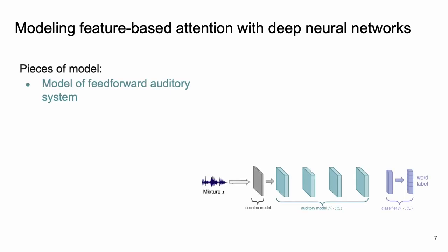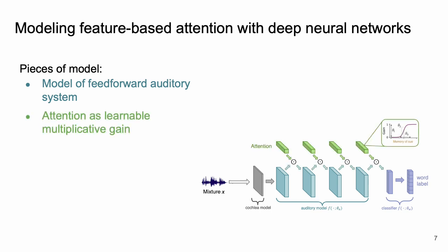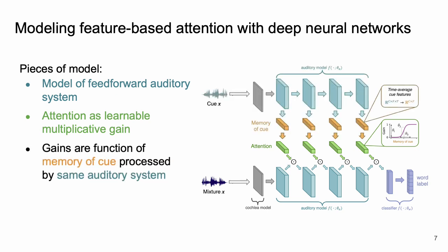We equip these gain functions to a standard model of the feedforward auditory system. These gain functions occur between every layer in the network, attenuating the model representations as they pass through the hierarchy. The gain values themselves are obtained as a function of our cue signals that have been passed through the same auditory model. In training, the parameters for the gain functions and auditory model are jointly optimized to support the word recognition task.